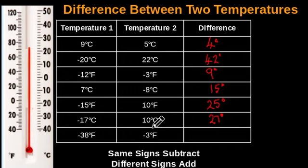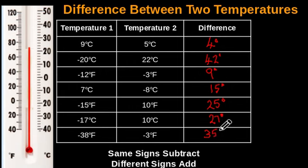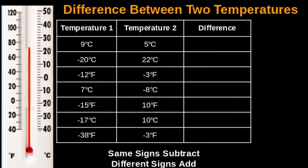And the last row, we have negative 38 degrees Fahrenheit and negative 3 degrees Fahrenheit. They're both negative temperatures — same signs. Subtract the smaller value from the bigger value: 38 minus 3 gives you 35 degrees as the difference. I hope you all got that. Thanks for watching and bye for now.